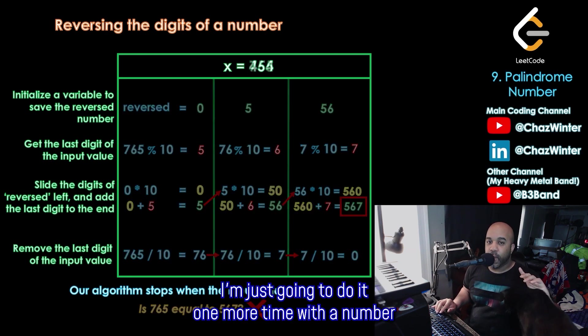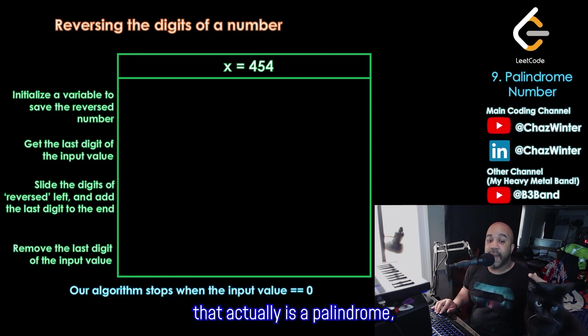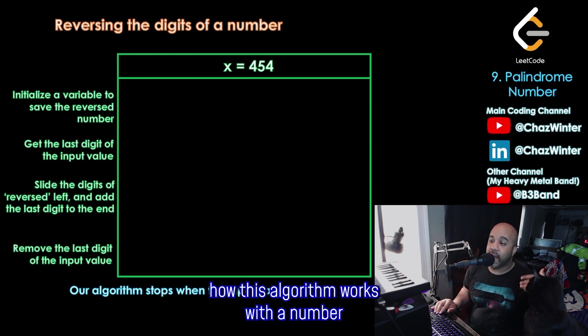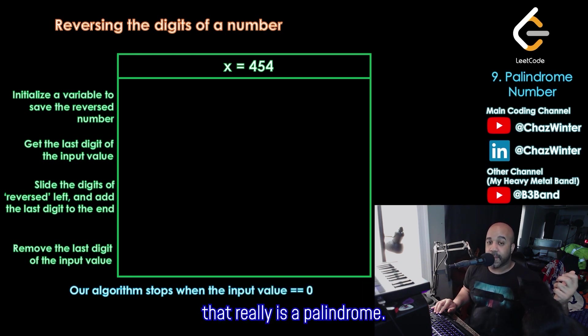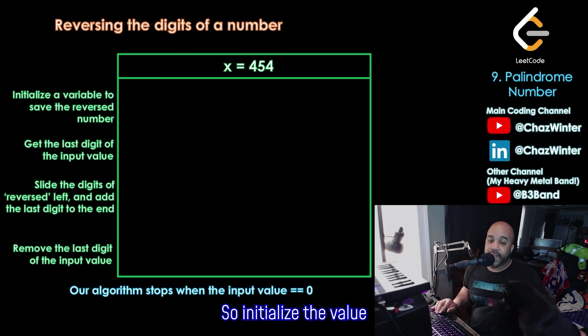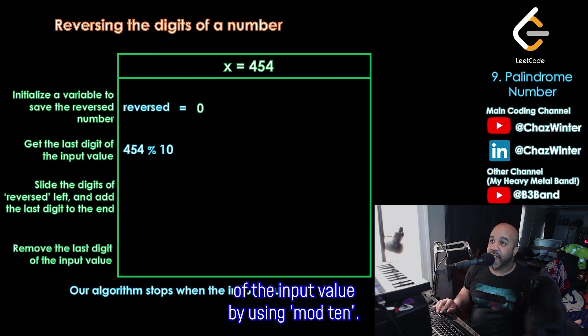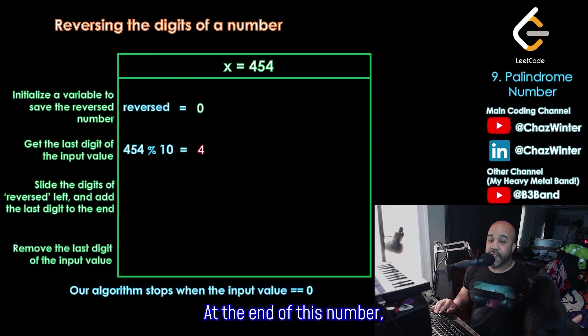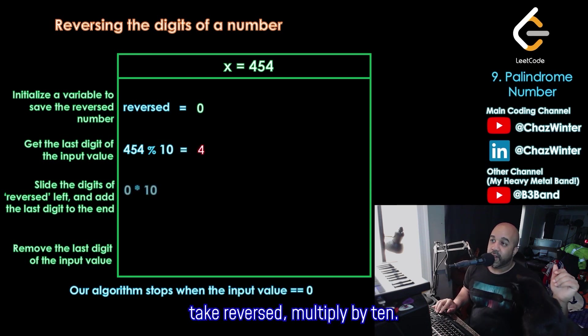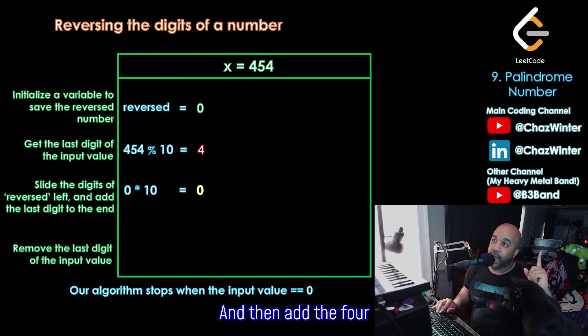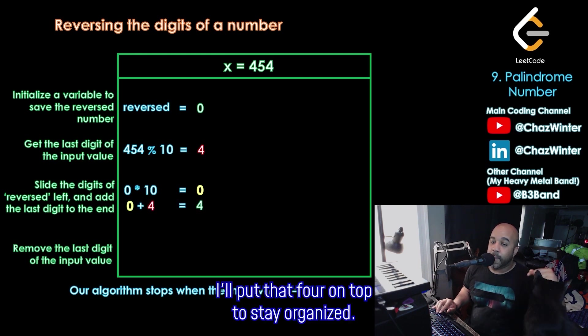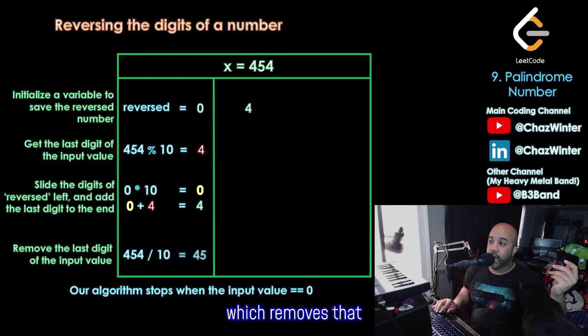I'm just going to do it one more time with a number that actually is a palindrome. And I'm going to go a little faster just so we could see how this algorithm works with a number that really is a palindrome. So initialize the value reversed, set it to 0. We're going to get the last digit of the input value by using mod 10. That'll get me just the 4 at the end of this number. Take reversed, multiply by 10. 0 times 10 is just 0. And then add the 4 from the previous step. I'll put that 4 on top to stay organized. And then we'll just take 454 and divide it by 10, which removes that final 4 from the number.